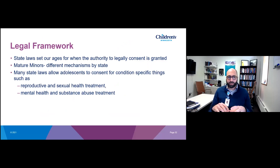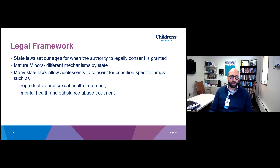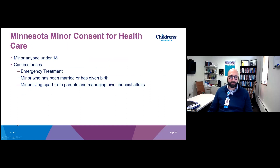State laws govern the ages at which the authority to legally consent is granted. In most states, that's 18. There's also the concept of mature minors, where maturity level is considered high enough to make a decision — to assent, dissent, or even legally consent. There are different mechanisms by state, so you really need to look into the mechanisms that exist within your own state. Most state laws, if not all, allow adolescents to consent for condition-specific things such as reproductive and sexual health treatment, mental health, and substance abuse treatments — many of these being public health issues.